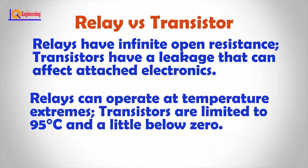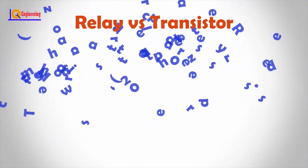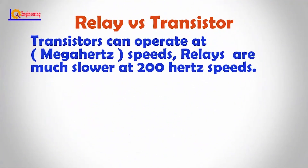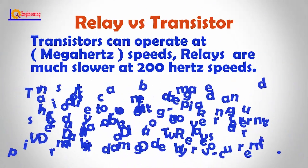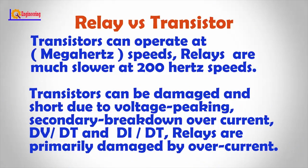Relays can operate at temperature extremes, while transistors are limited to 95 degrees centigrade and a little below zero. Transistors can operate at speeds in the megahertz range, while relays are much slower at around 200 hertz. Transistors can be damaged and short due to voltage peaking, secondary breakdown, overcurrent, dV/dt, and dI/dt.